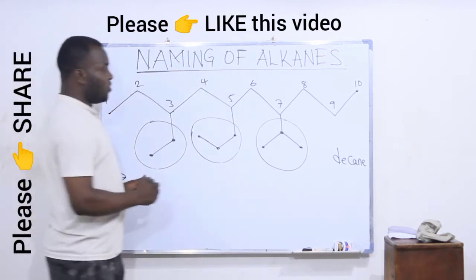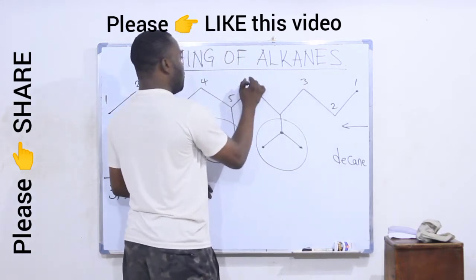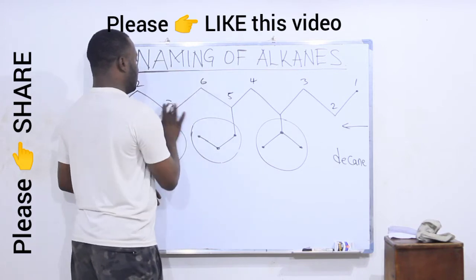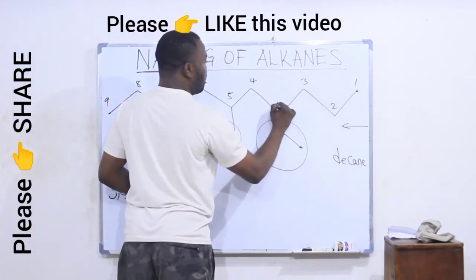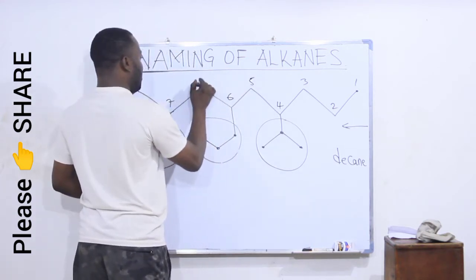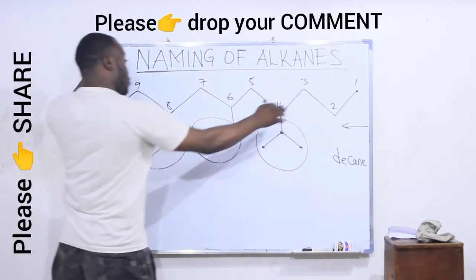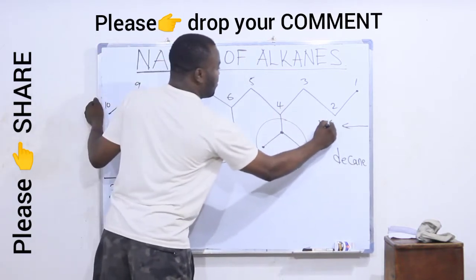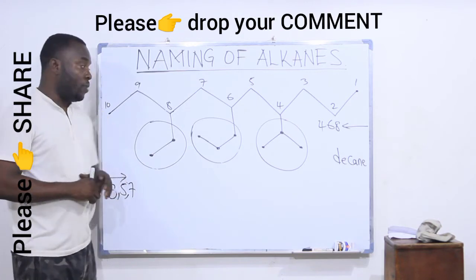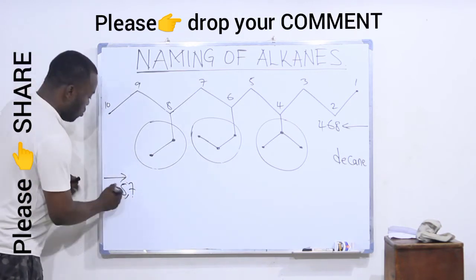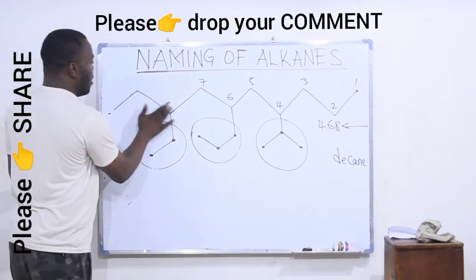Numbering from right to left, the attachments would be at positions 4, 6, and 8. The rule says follow the direction that gives the attachments a lower number. From left to right I have them at 3, 5, 7. From right to left: 4, 6, 8. So the left-to-right direction is lower. I will number from left to right: 1, 2, 3, 4, 5, 6, 7, 8, 9, 10.